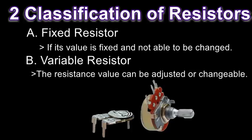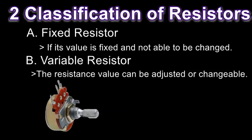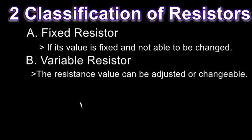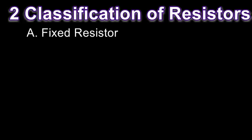In variable resistors, the resistance value can be adjusted or changed. For example, a volume control or potentiometer having a written value of 10 kilo-ohms — rotating its shaft from maximum to the middle, we could measure a value of at least 8 kilo-ohms. Going to the minimum, we could have at least 5 kilo-ohms or lower. This shows that the resistance value of a variable resistor varies — from the word itself, variable.